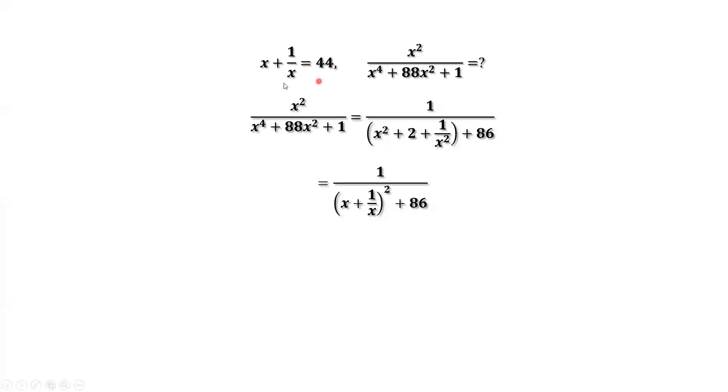From the given condition, x plus 1 over x equals 44. Therefore, x plus 1 over x squared equals 44 squared. We have 44 squared here.